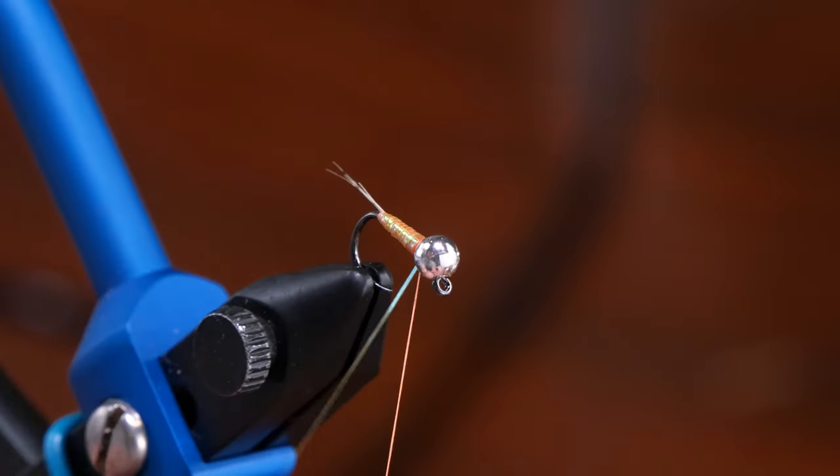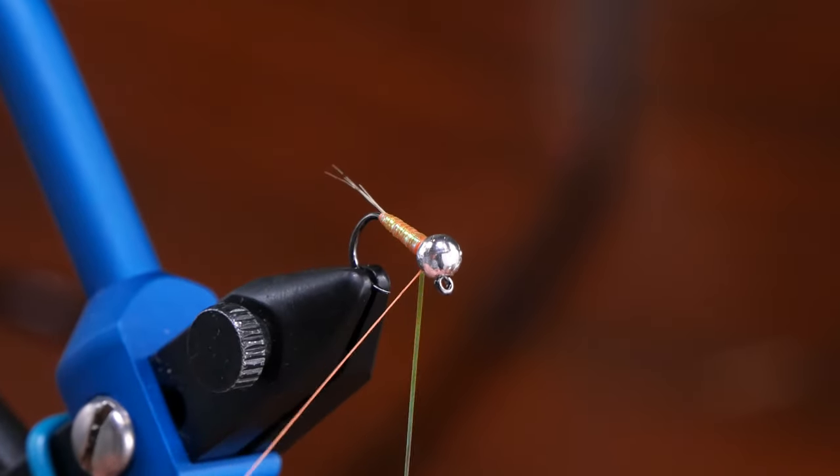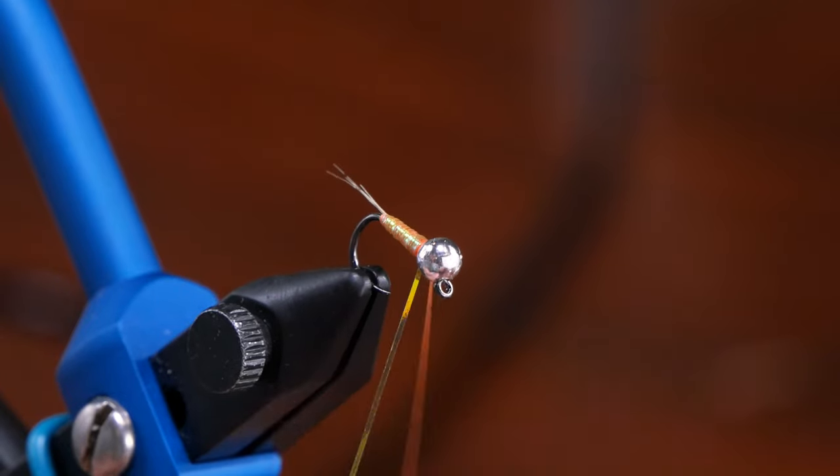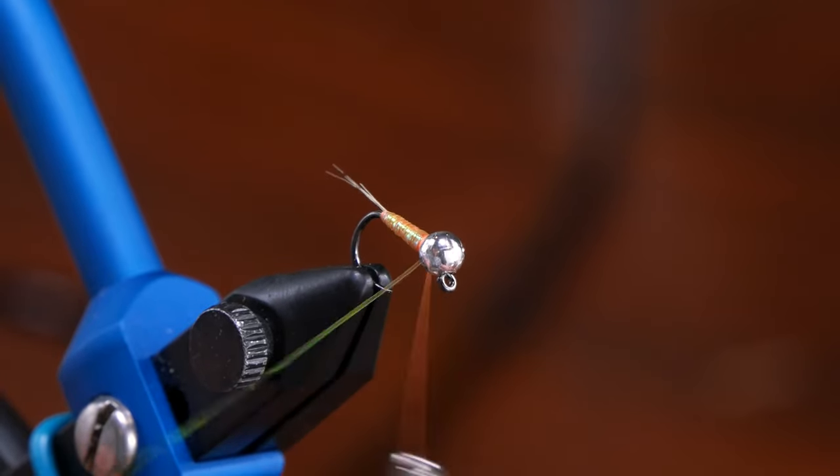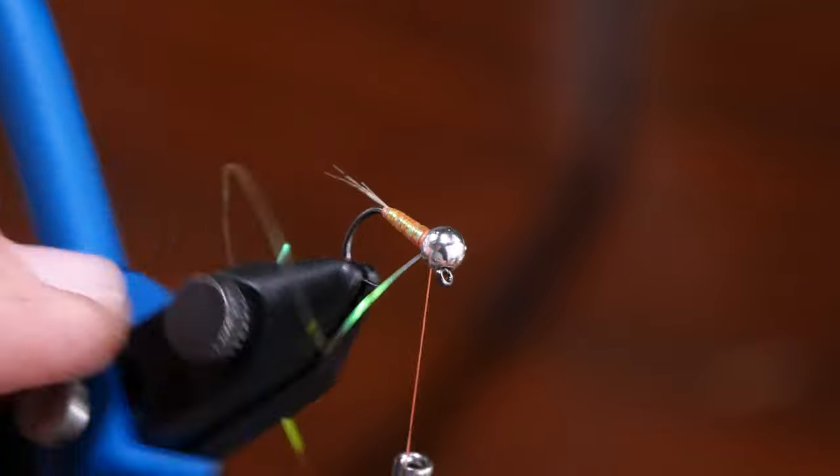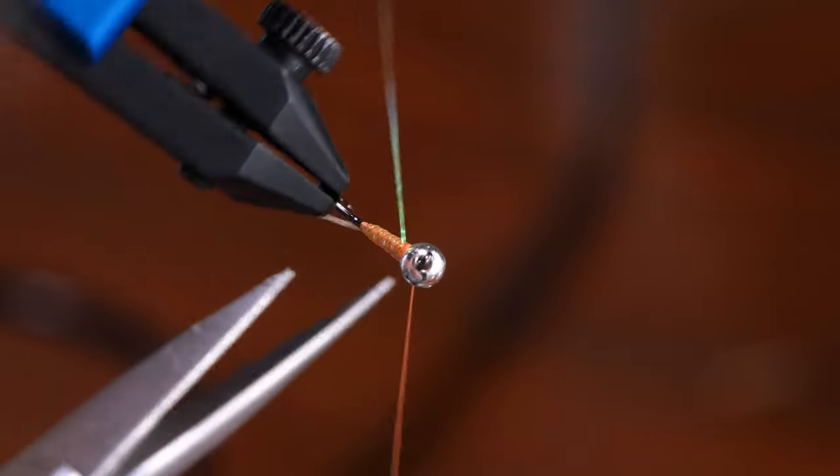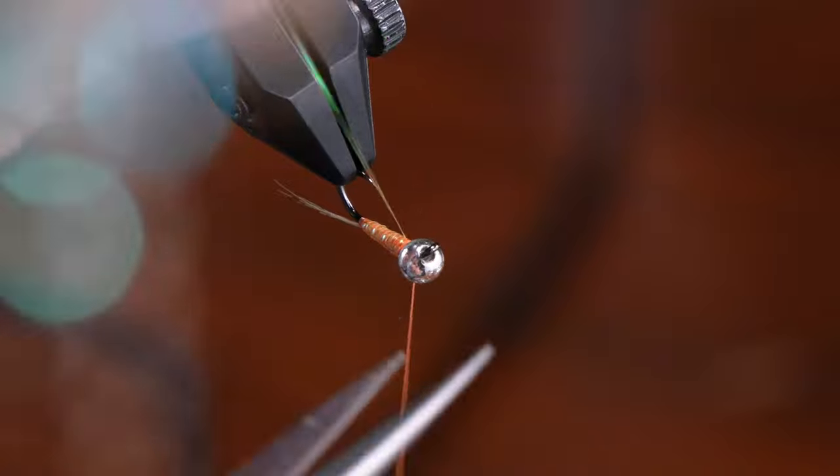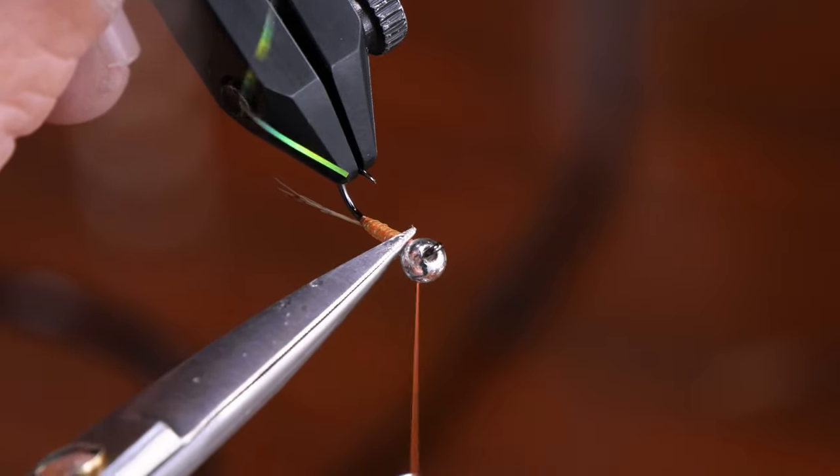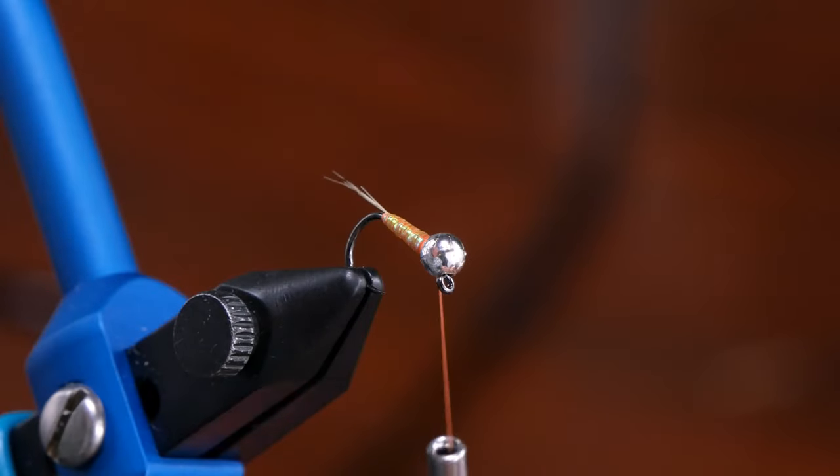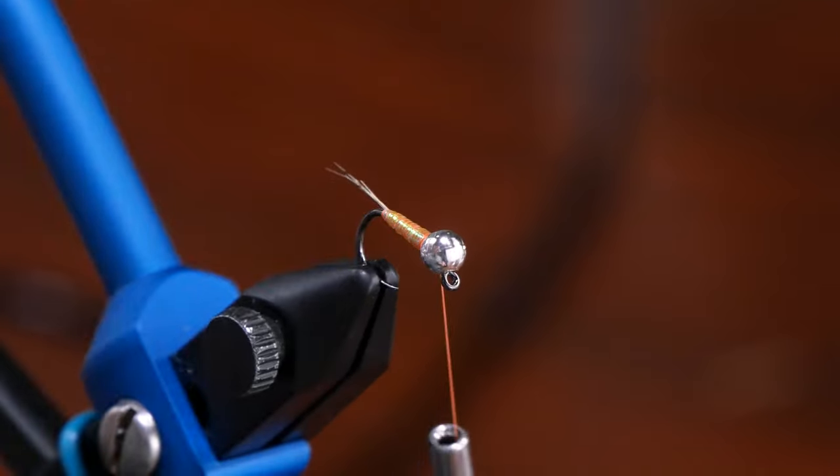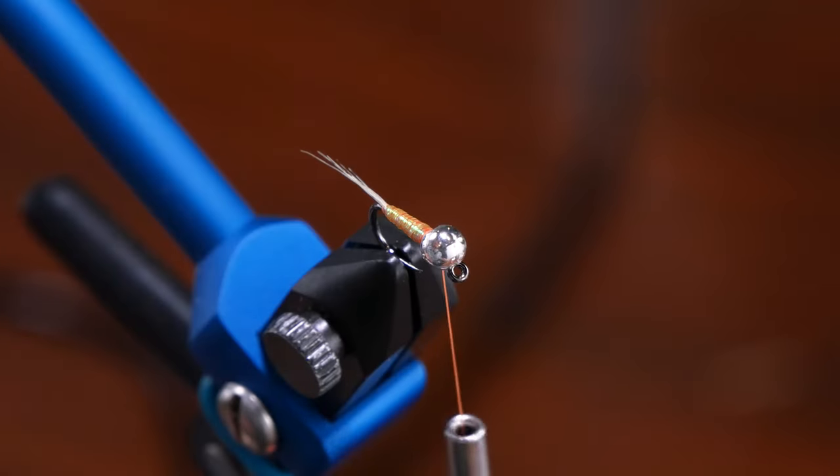Once you have everything up at the front, we're just going to crisscross the thread in the flash. I'm going to come up and capture that. Not a lot of wraps. I just captured twice, and I'm going to cut flush. Whenever you're cutting material thread on a perdigone body, the closer you are, the better off and the smoother your body will be. Sharp scissors can be your friend in that situation.